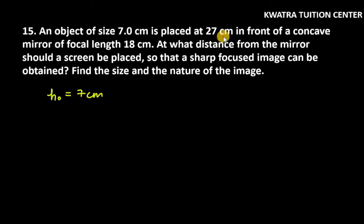It is given is placed at 27 cm in front of a concave mirror. This means your object distance is minus 27 cm. f is given. f is 18 cm and a concave mirror is given. In the case, it is in negative. So it is minus 18 cm. These three things are given to us.